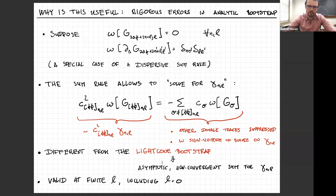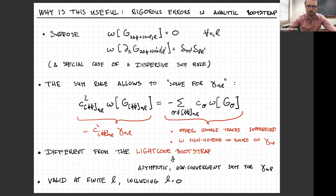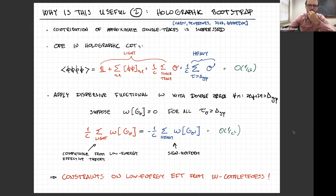The double zeros on all other double traces mean they are suppressed and don't appear at leading order on the right-hand side — we've diagonalized the crossing equation with respect to n and L. If omega is non-negative everywhere the operators on the right appear, including more operators can only make the right-hand side more negative, giving a rigorous upper bound. This is quite different from the light-cone bootstrap, which doesn't give such a convergent sum rule. Moreover, such sum rules also make sense at L equal to zero, even in the region where you can't trust the inversion formula in general.